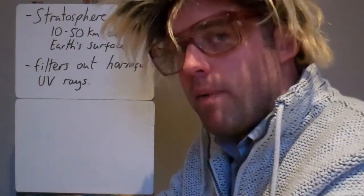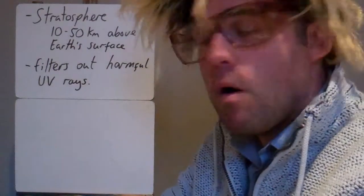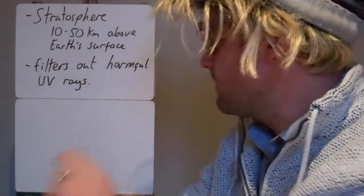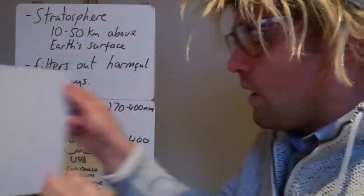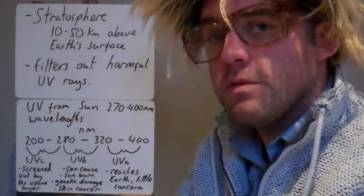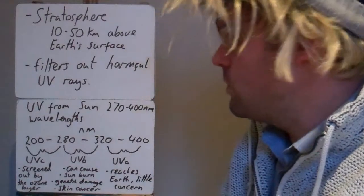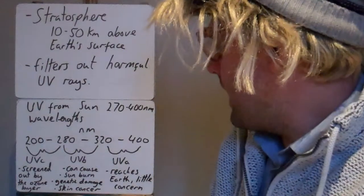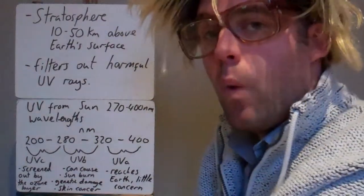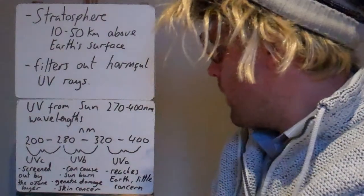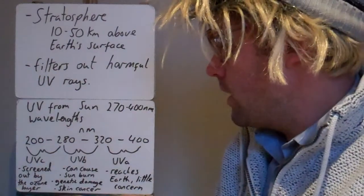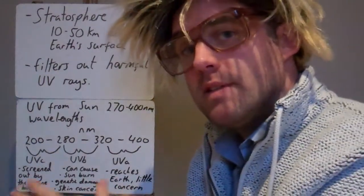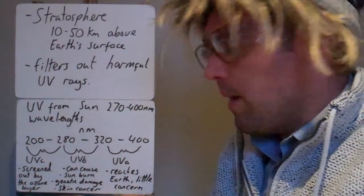The main job of the ozone layer is to filter out harmful UV rays. The UV comes from our Sun, it's UV radiation, and it has different wavelengths. The wavelengths are between 270 and 400 nanometers. Those different wavelengths are dealt with differently in the process.